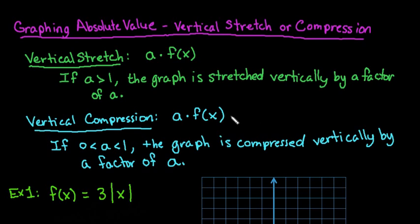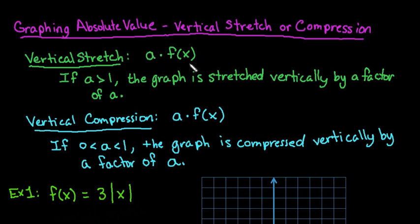For this video, we're going to graph an absolute value that contains a vertical stretch or a compression. We know that we have a vertical stretch if we have a term on the outside of the absolute value, or the outside of a quadratic or a radical — the outside of whatever function you're dealing with.